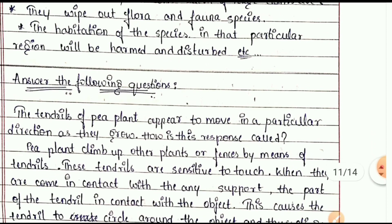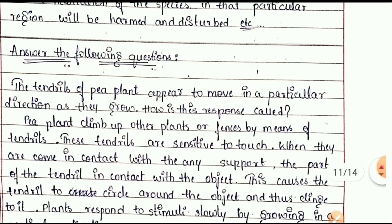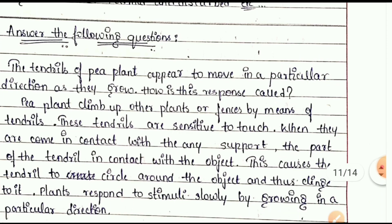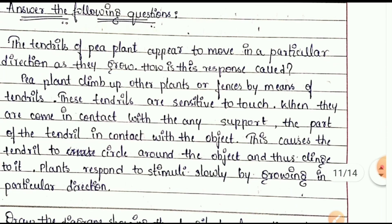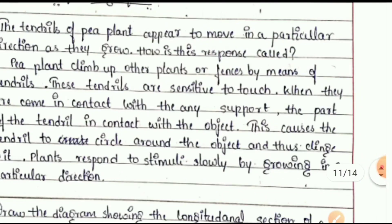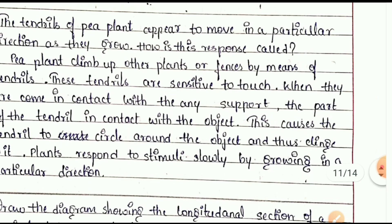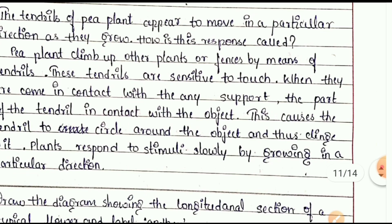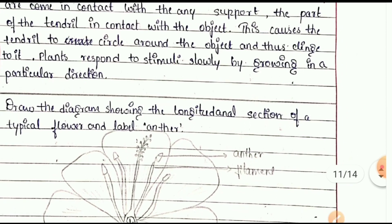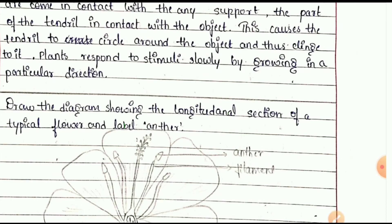Questions 32 and 33 are two-mark questions. Tendrils of a pea plant appear to move in a particular direction as they grow. How is this response caused? See the answer by scrolling down and write a proper answer mentioning the correct points.